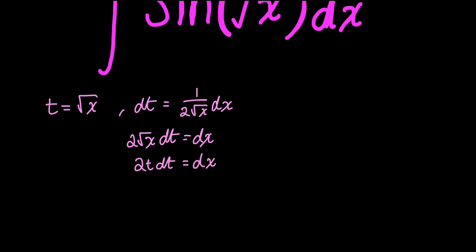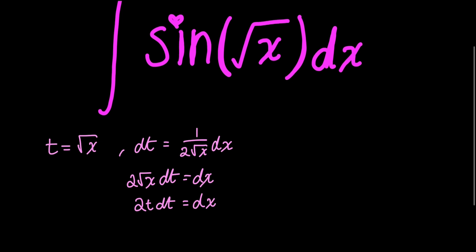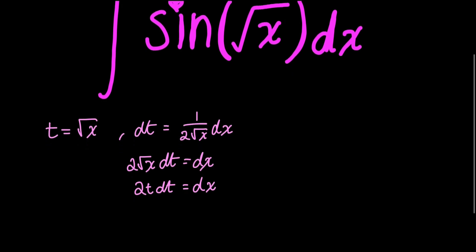Now I can rewrite my integral in terms of the variable t. I'm going to take the constant 2 out, so I'll have 2 times the integral of t sine t dt.